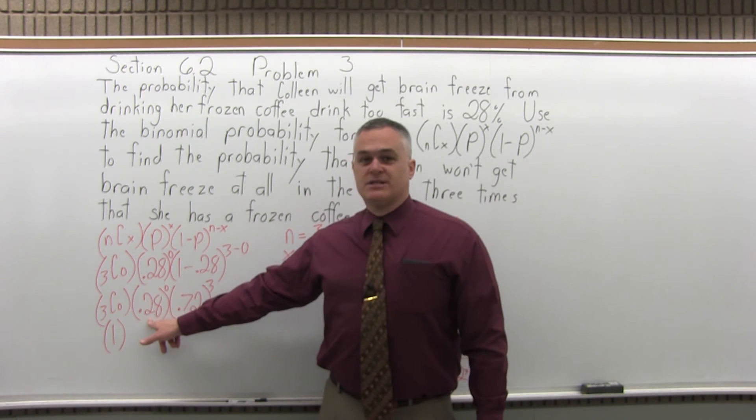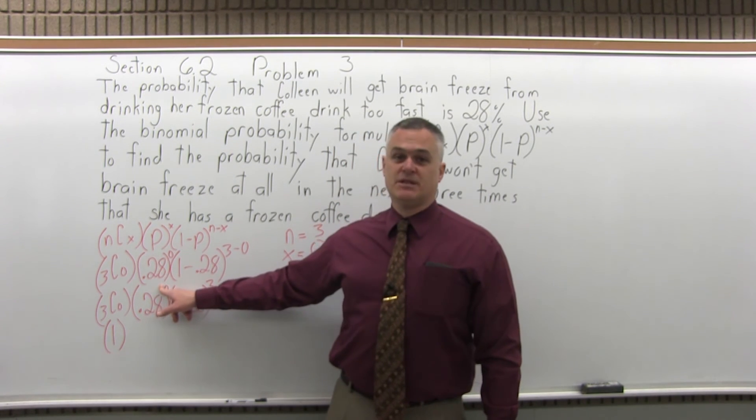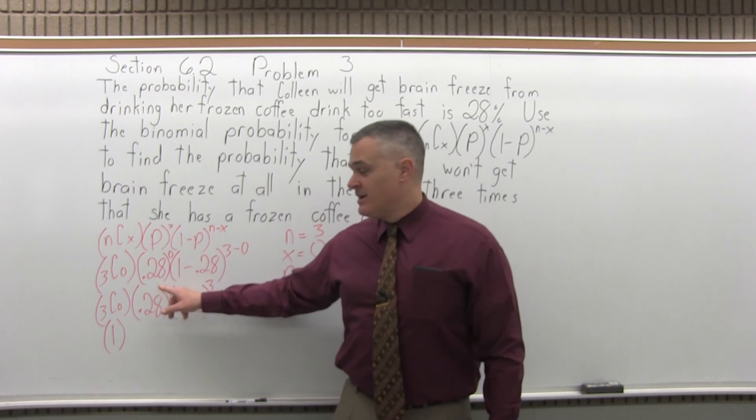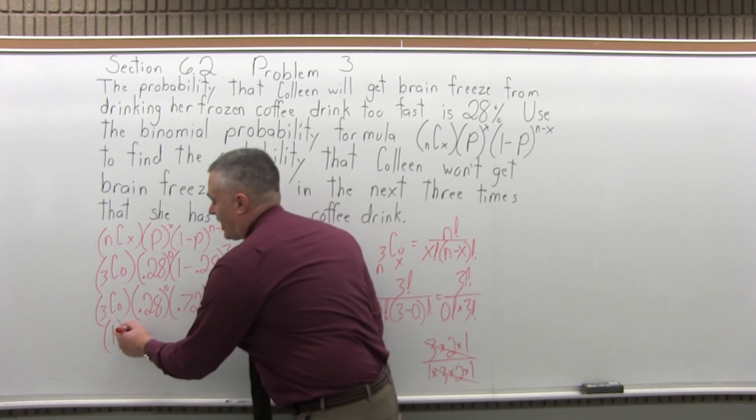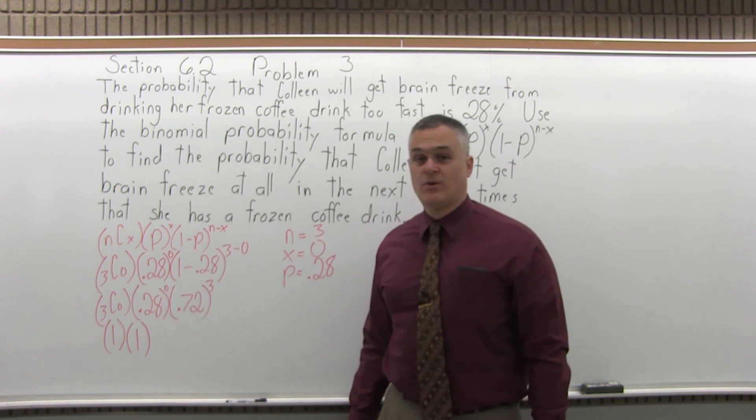Now the middle set of parentheses is also a special rule for whenever you have anything raised to an exponent of 0. That answer is always 1. You might think that it would be 0, but it's not. Anything to the 0 power is 1, so the middle set of parentheses is also 1.